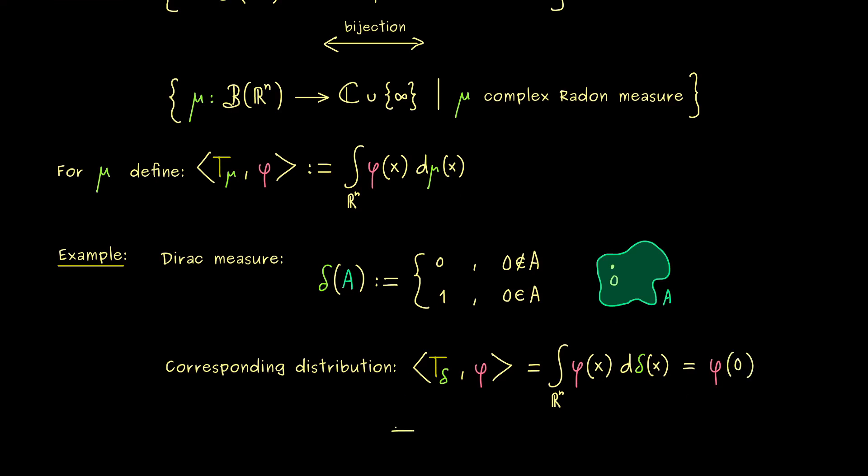In other words, our T_δ here is nothing else than the delta distribution. Hence, we conclude with our bijection from before, the Dirac measure and the delta distribution are exactly the same thing. So for distributions of order zero, it's a matter of taste if you want to work with them or with the measures.